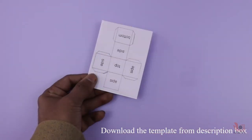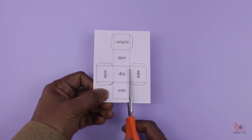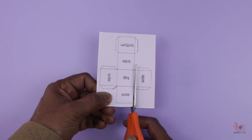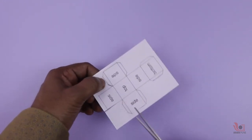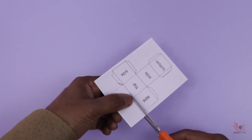You can also download the template from the description box given below. Now cut gently with the help of scissors along the outer lines of the template. After completion, the paper will look like a 2D net.